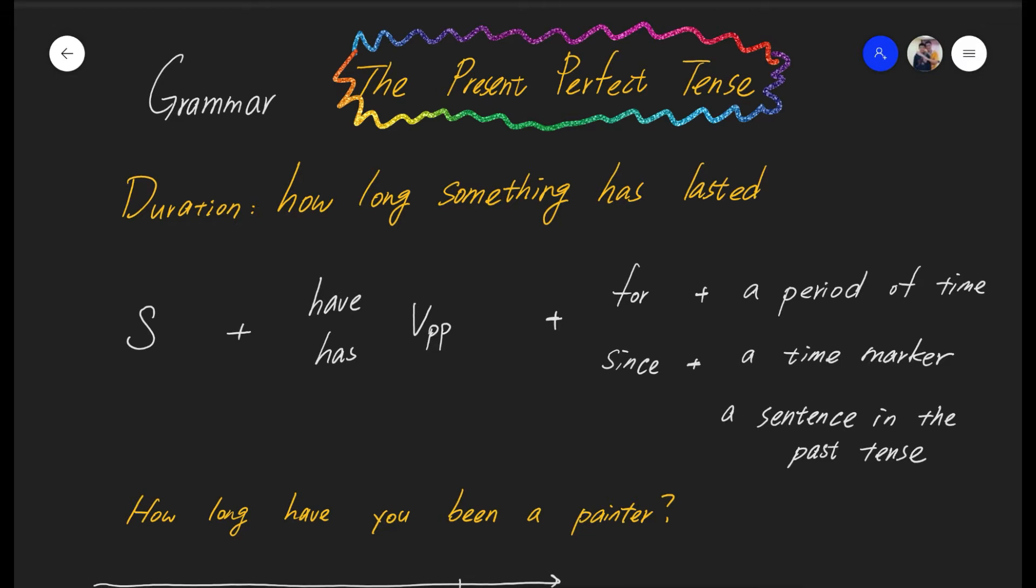Welcome to the Portable Clip. Today's video is about using the present perfect tense to talk about the duration of activities and things.